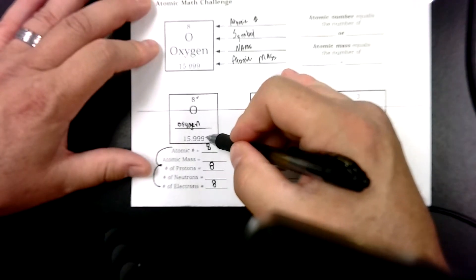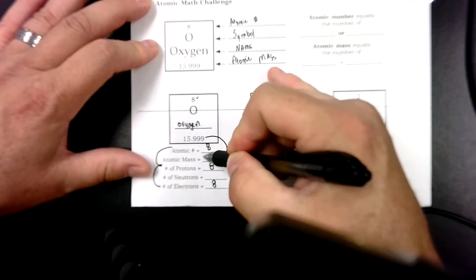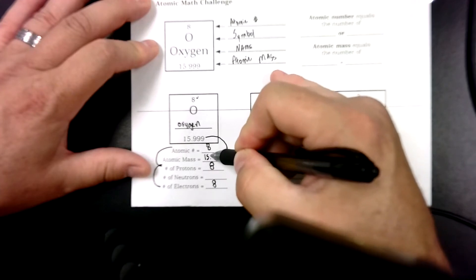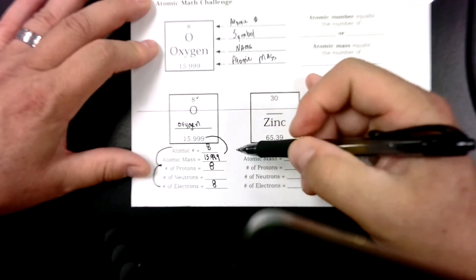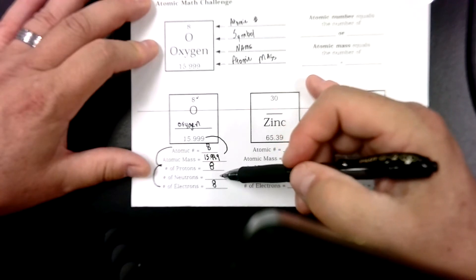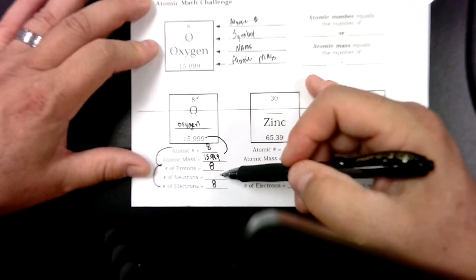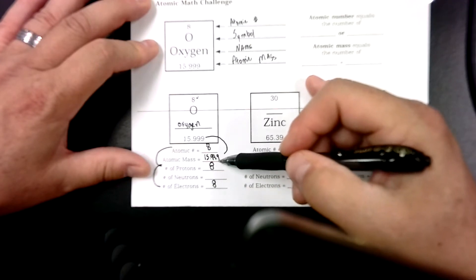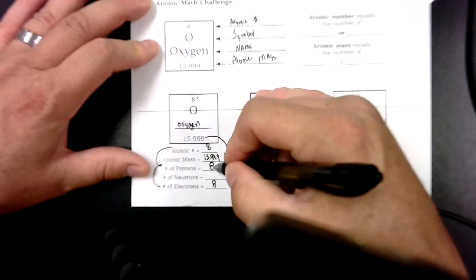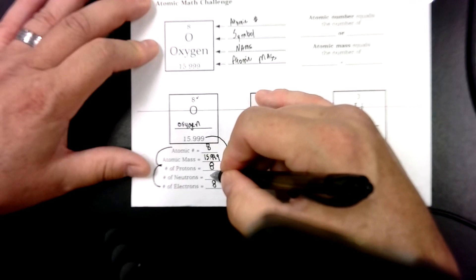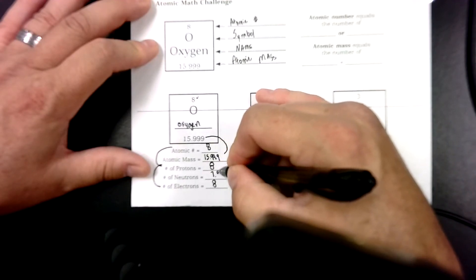Atomic mass, I'm going to get from right here. It's going to go right here, and I have 15.999. Now, the only thing we have left now are neutrons. If I find neutrons, it is the mass minus the protons, whatever's left is neutrons. So I take 15.99 minus 8, and I get 7.99.